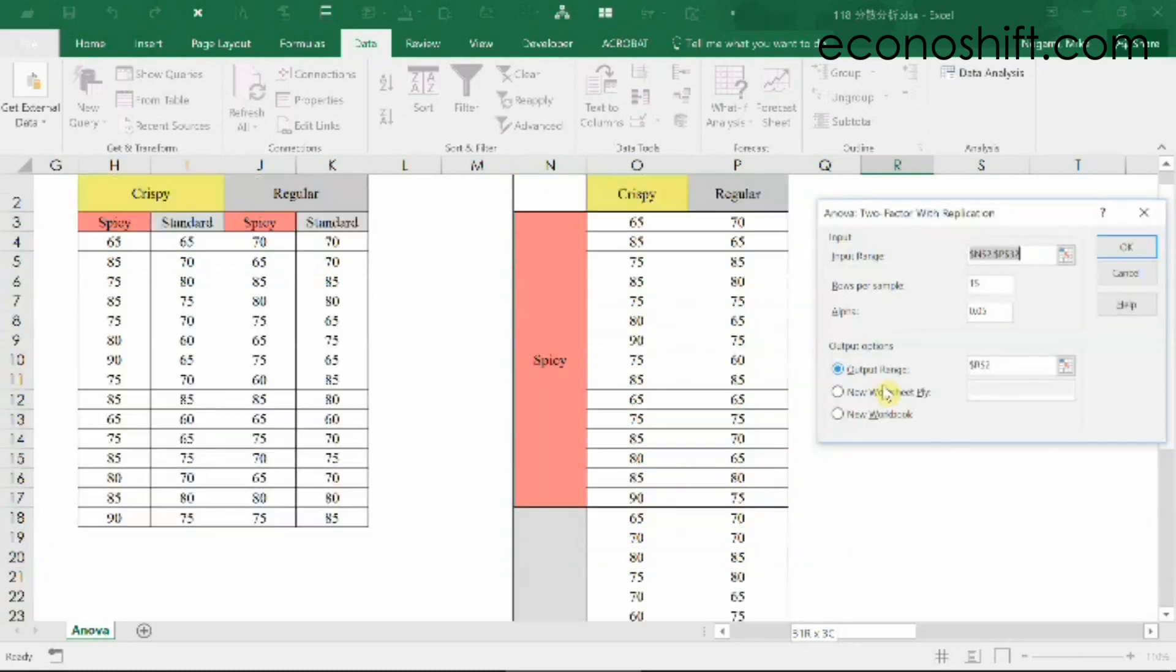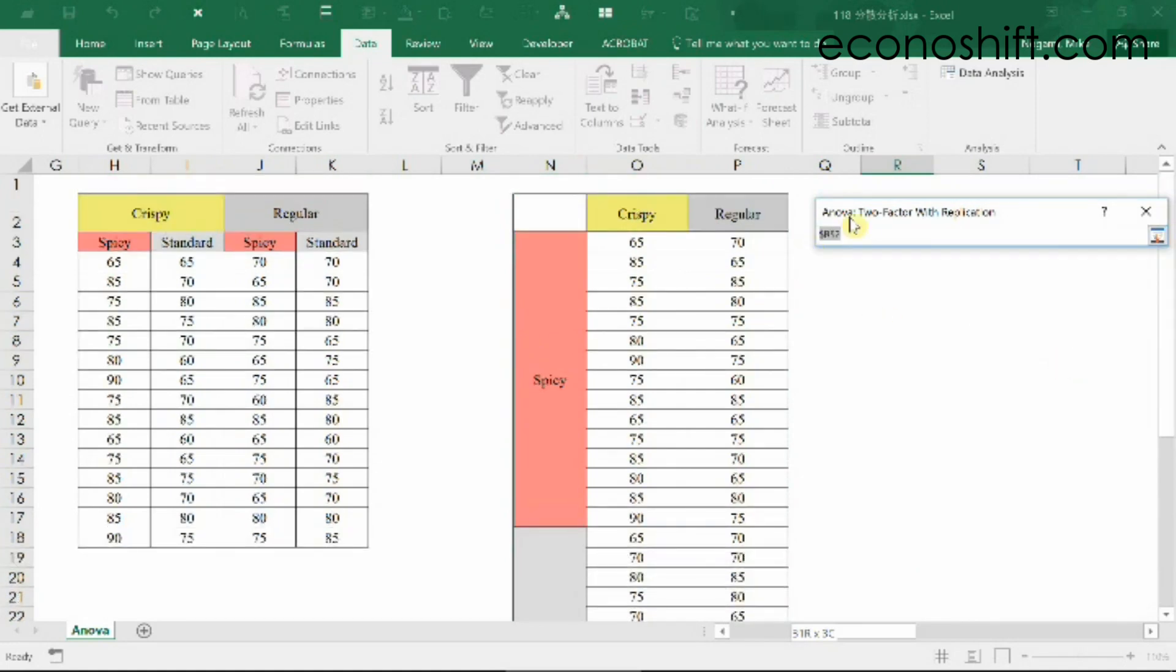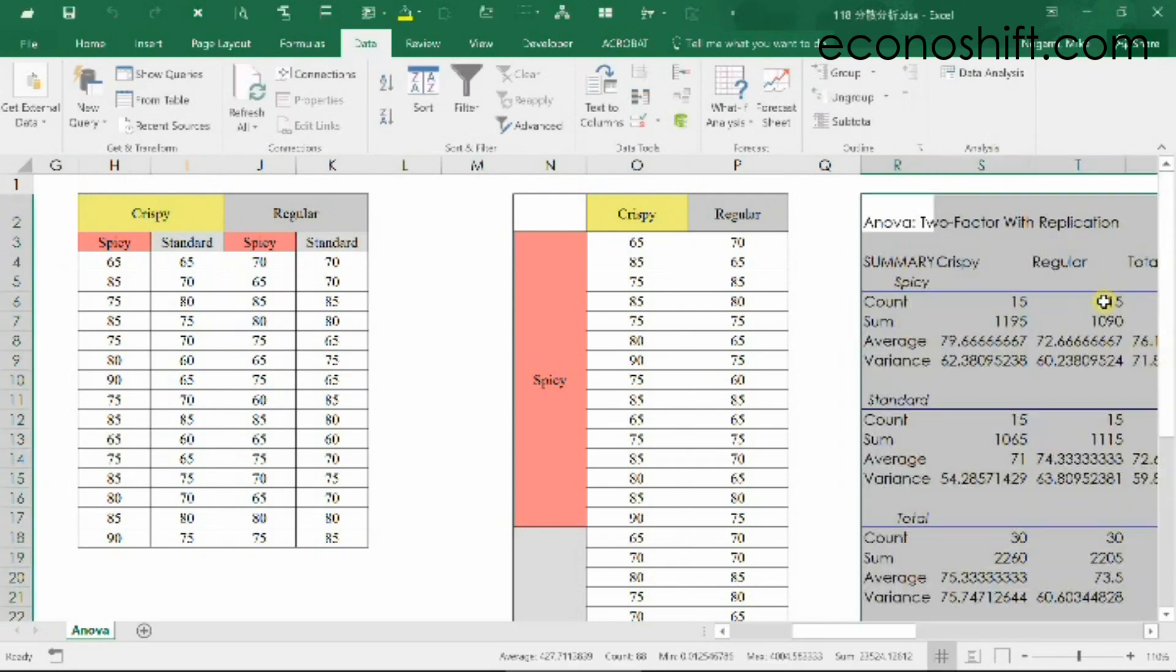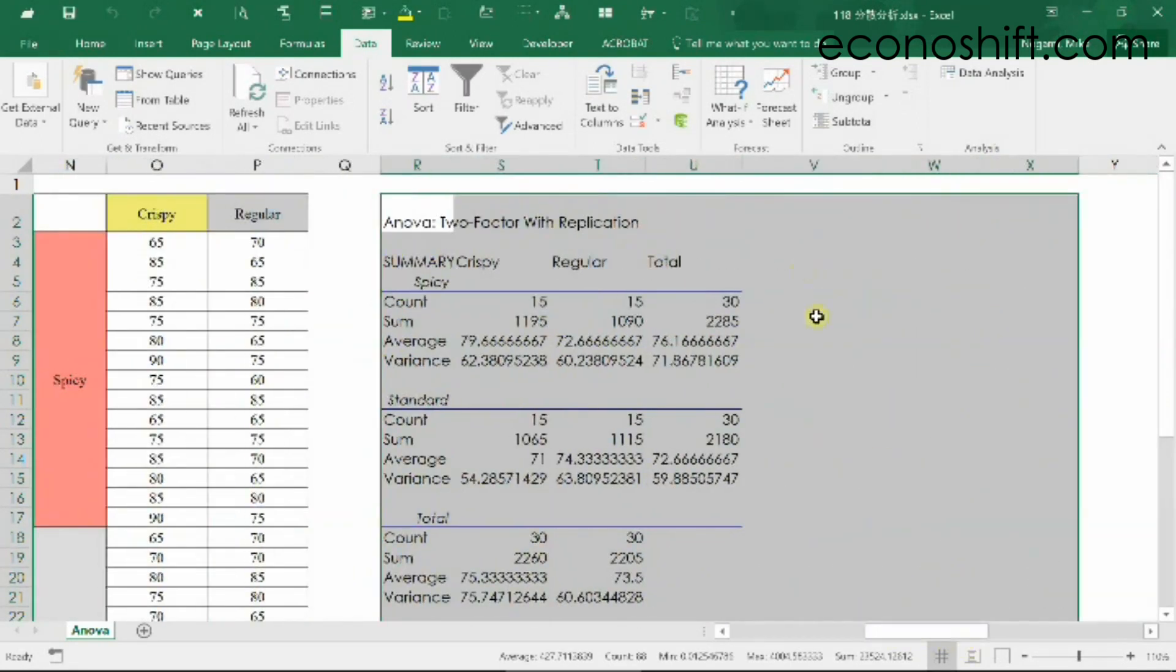For the output options, you can click the output range and select any place you like and click OK. Then, after a few seconds, you'll get the result.